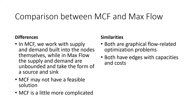Let's go through some similarities and differences between the MCF problem and the max-flow problem. In MCF, we work with supply and demand built into the nodes themselves, while in max-flow the supply and demand are unbounded and take the form of a source and a sink — we want to send as much flow as possible. In MCF, we just have these limited amounts of supply and demand, and because of that, it's possible that it doesn't have a feasible solution — maybe there's not enough supply to meet demand, or there's too much supply. In terms of similarities, both are graphical flow-related optimization problems, and both have edges with capacities.